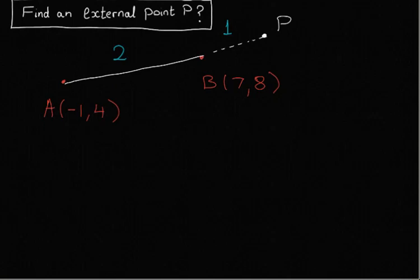Hello and welcome to Maths Plus. Today we're doing an external point of a line. So we have points A and B, minus 1, 4, and 7, 8, and we want to find an external point out here. We're given the proportion of 2 as to 1, so let's look how to do it with proportions.